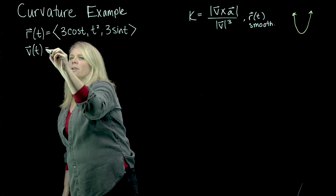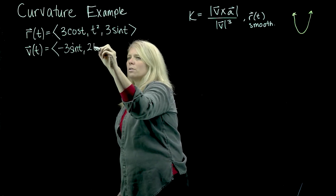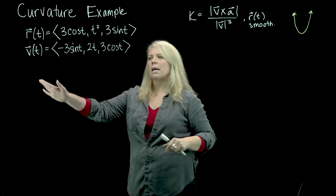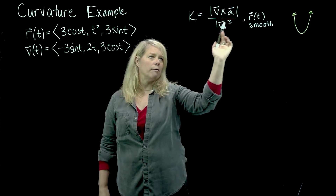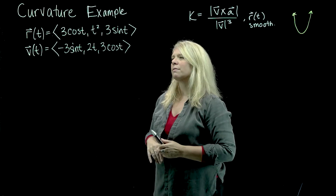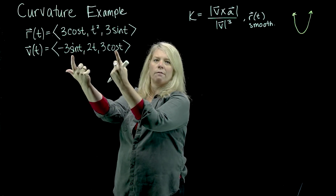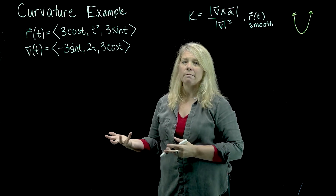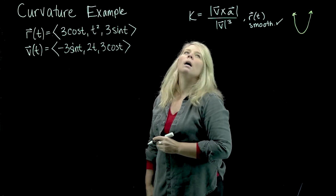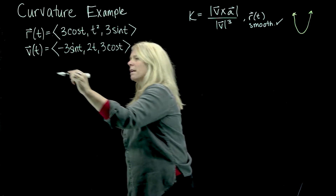Our V vector is our derivative: negative 3 sine t, 2t, and 3 cosine t. Notice that at this point we can determine that we do have a smooth parameterization. This derivative vector is continuous for all values of t, and this is never the zero vector because the sine function and the cosine function are never zero at the same t value. So we do have a smooth parameterization for this problem. I'll go ahead and write down my A vector as well.